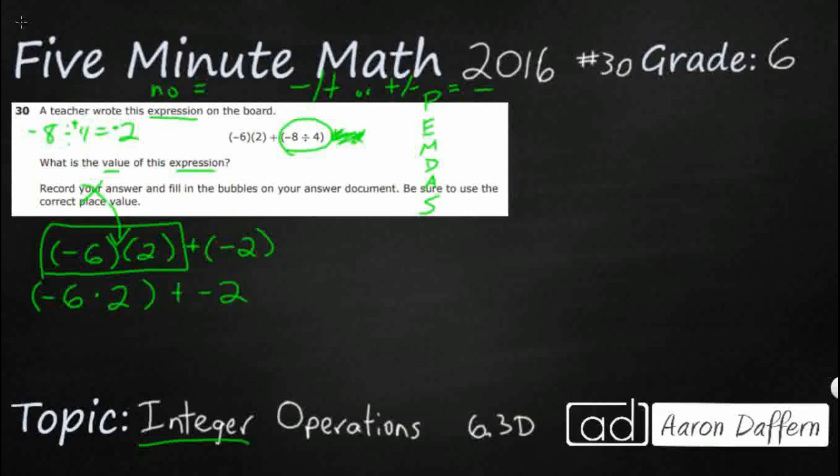Another way we could have done that is we simply could have done it like this. We could have done negative 6, you could have had one of them outside of the parenthesis. Or you could have done like this, negative 6. That's a little bit weird, typically that this number would always go in front, but it wouldn't make any difference with the order property.